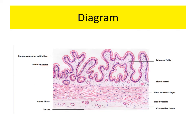This is a diagram of the histology of the gallbladder. You can observe the simple columnar epithelium resting on the lamina propria, which together forms the mucosa. The mucosa is thrown into many folds and rests on the fibromuscular layer, which is a combination of fibers and smooth muscle. The last layer is the serosa.